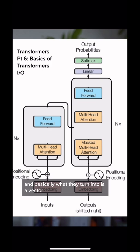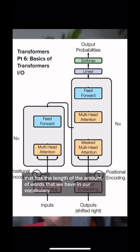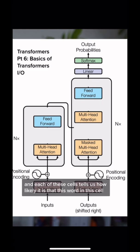Basically, what they turn into is a vector that has the length of the amount of words we have in our vocabulary. Each of these cells tells us how likely it is that this word in this cell is going to be the next word in our sequence.